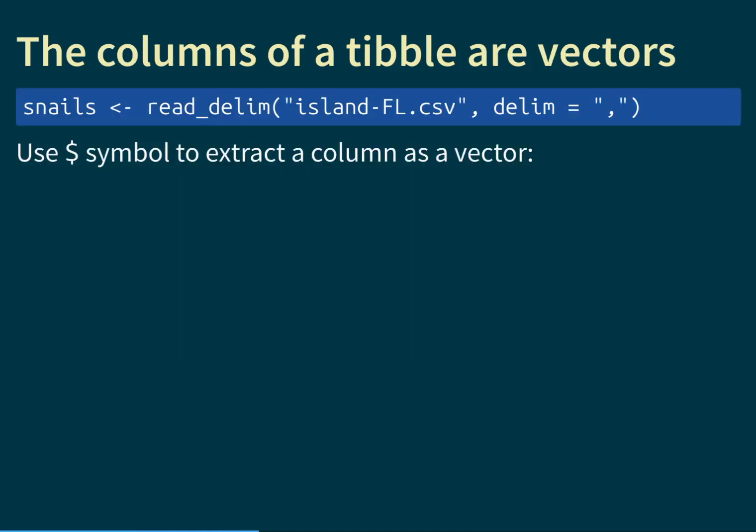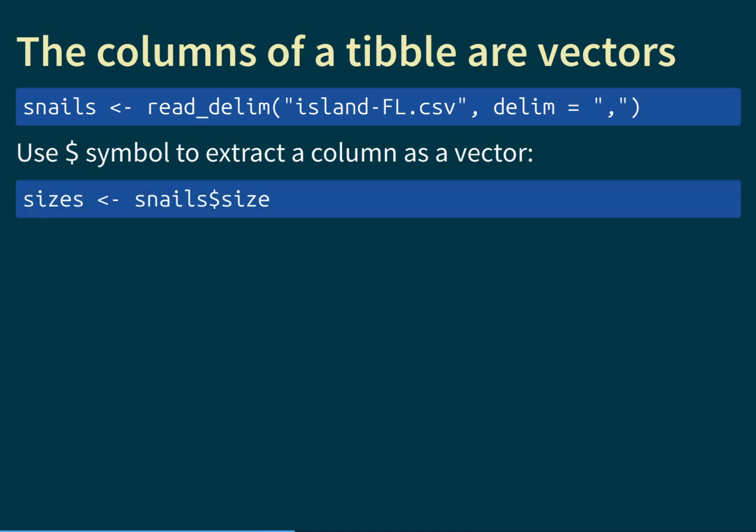We can demonstrate explicitly that tibble columns are just simple vectors. Let us read in the data file and assign it to a variable called snails, so we can refer to it by name. You can use the dollar symbol to extract a column as a vector: write the table name, then the dollar symbol, then the column name. For example, we define a variable called sizes assigned to snails$size, which extracts just that one column from the snails dataset.